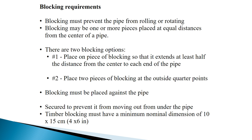Option two: place two pieces of blocking at the outside quarter points. Blocking must be placed against the pipe and secured to prevent it from moving out from under the pipe. Timber blocking must have a minimal nominal dimension of 10 by 15 centimeters.